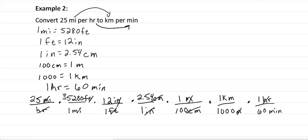Everything that's on top we're multiplying. Everything that's in the denominator we're dividing. So we're going to have 25 times 5,280 times 12 times 2.54 divided by 100 divided by 1,000 divided by 60. And let's throw that in the calculator.